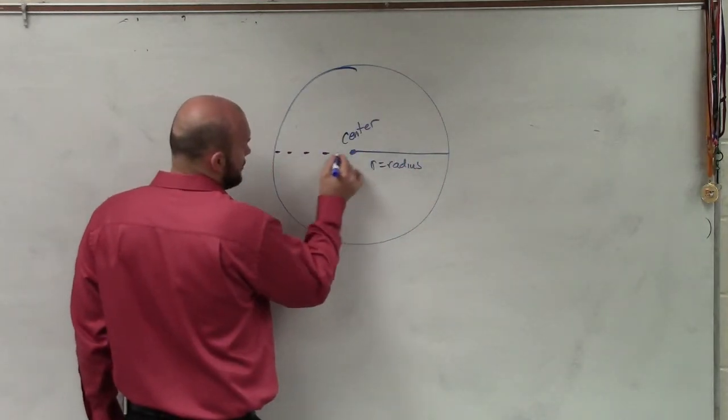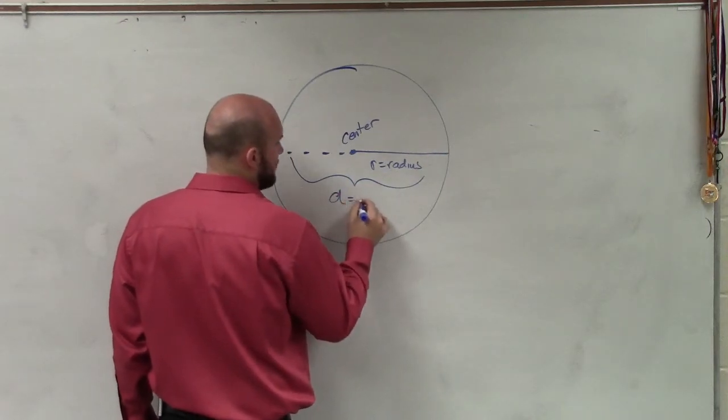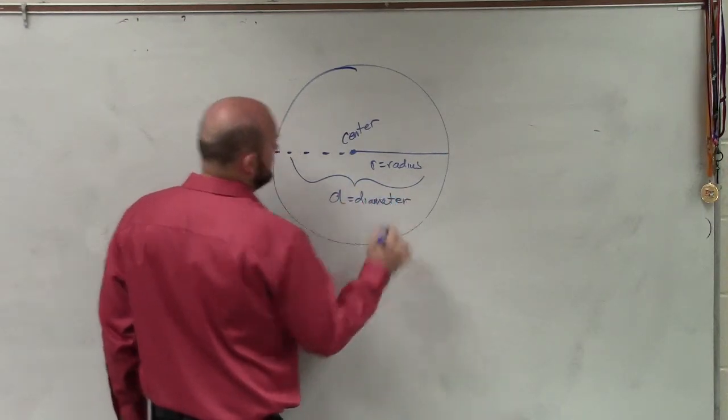Then there's also a distance that's all the way across the circle. And we'll call that D for diameter.